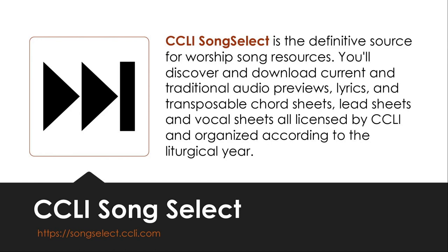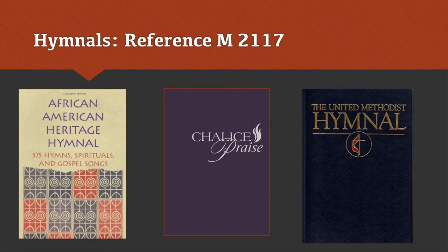Christian Copyright Licensing International itself provides a resource called CCLI Song Select. With this resource you can find and download audio previews, lyrics, and transposable chord sheets. All of these are licensed by the CCLI for worship and are arranged according to the liturgical year. Of course, the library also holds a variety of print hymnals for almost every denomination in the reference section under the M2117 call number — M stands for music. And there are even more options for circulating hymnals in the book stacks.